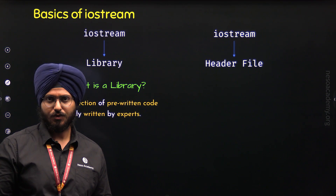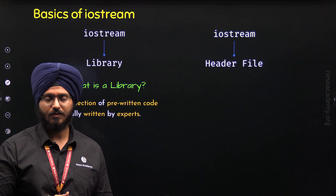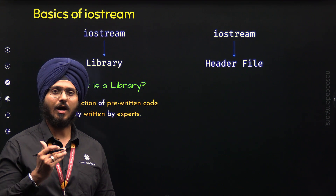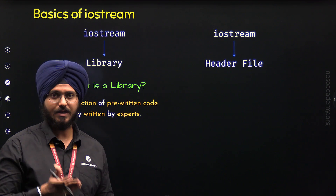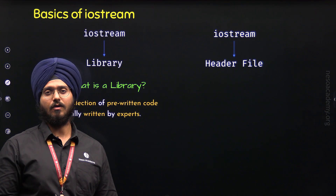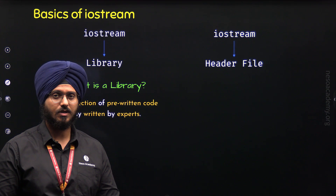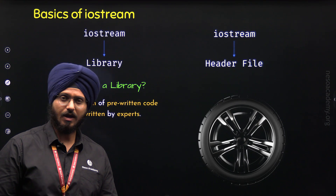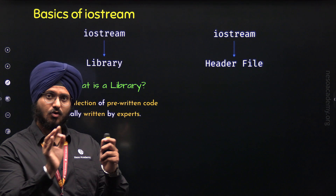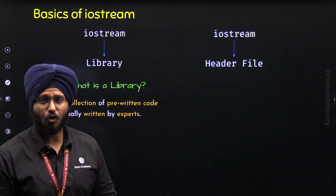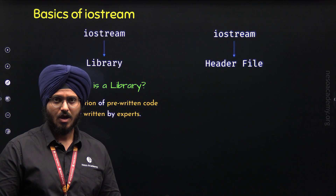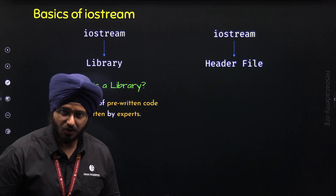We do not have to write the code — we can directly use it whenever we need to. For example, let's say we want to use std::cout. We can use std::cout directly without worrying about how it works behind the scenes. We have already used std::cout to print something on the screen. We used it because the code of std::cout is already written for us. There is no need to reinvent the wheel. The collection of all such pre-written code is what we call a library.